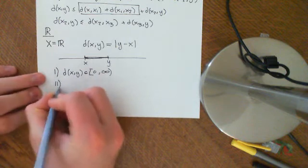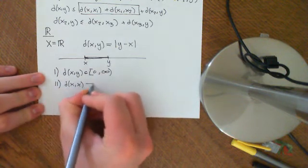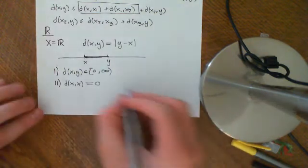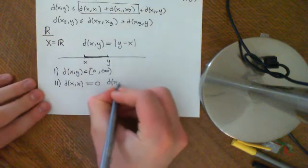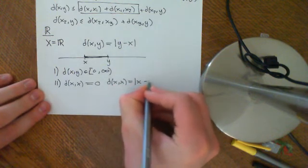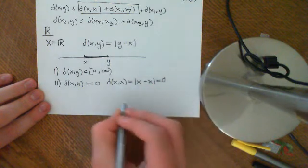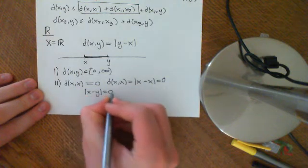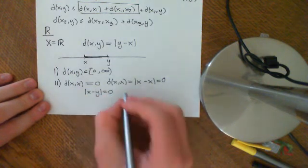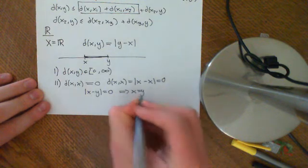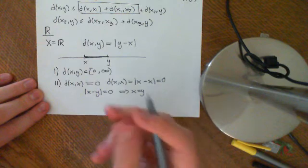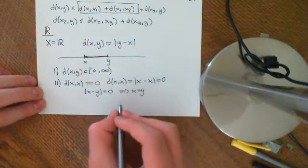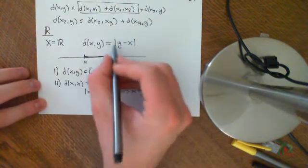Second axiom: the distance between x and x is equal to 0, and that works both ways — if it's equal to 0, it implies they are equal to each other. Checking the forward direction: d(x, x) equals the modulus of x minus x, which is indeed equal to 0. On the other hand, if the modulus of x minus y equals 0, then that implies x equals y, because the only way the modulus can equal 0 is if the two points are the same. Otherwise this will always be some positive number.